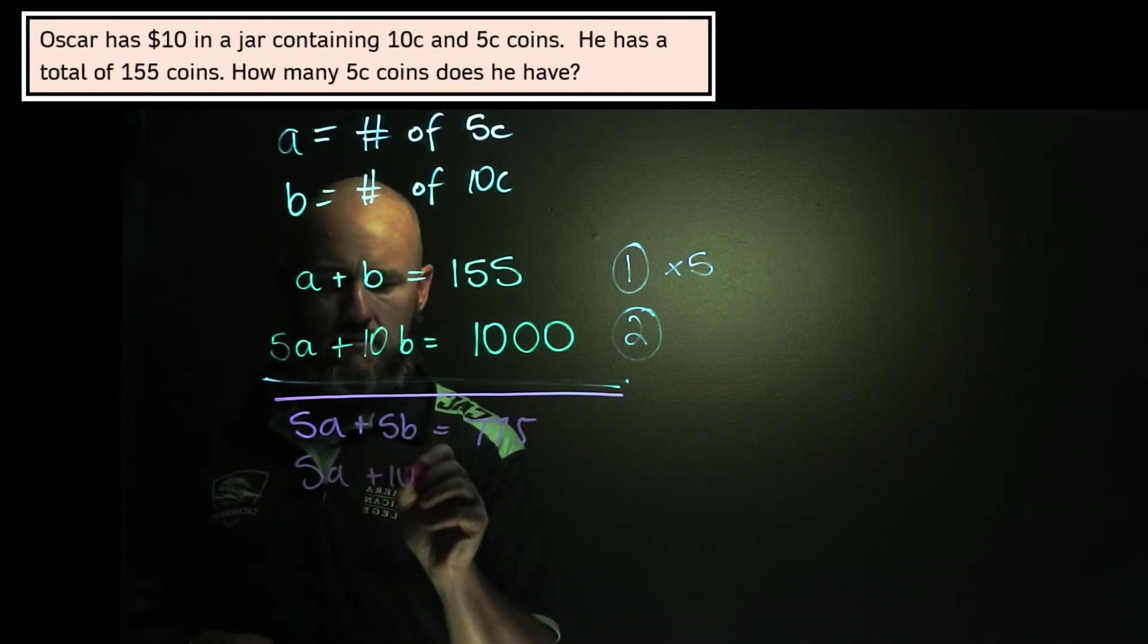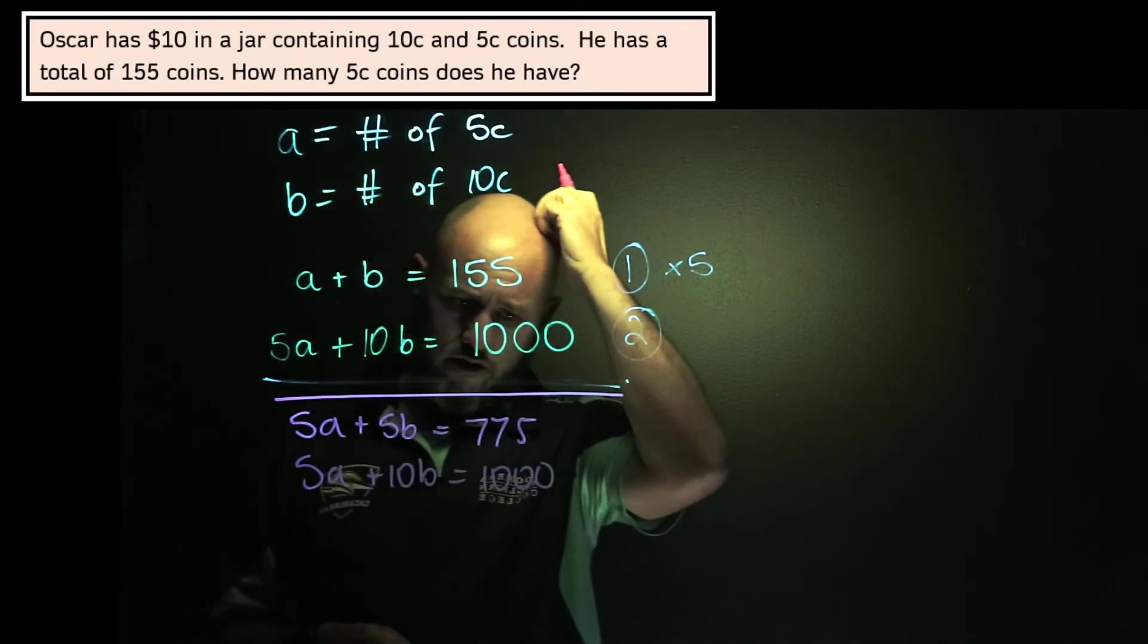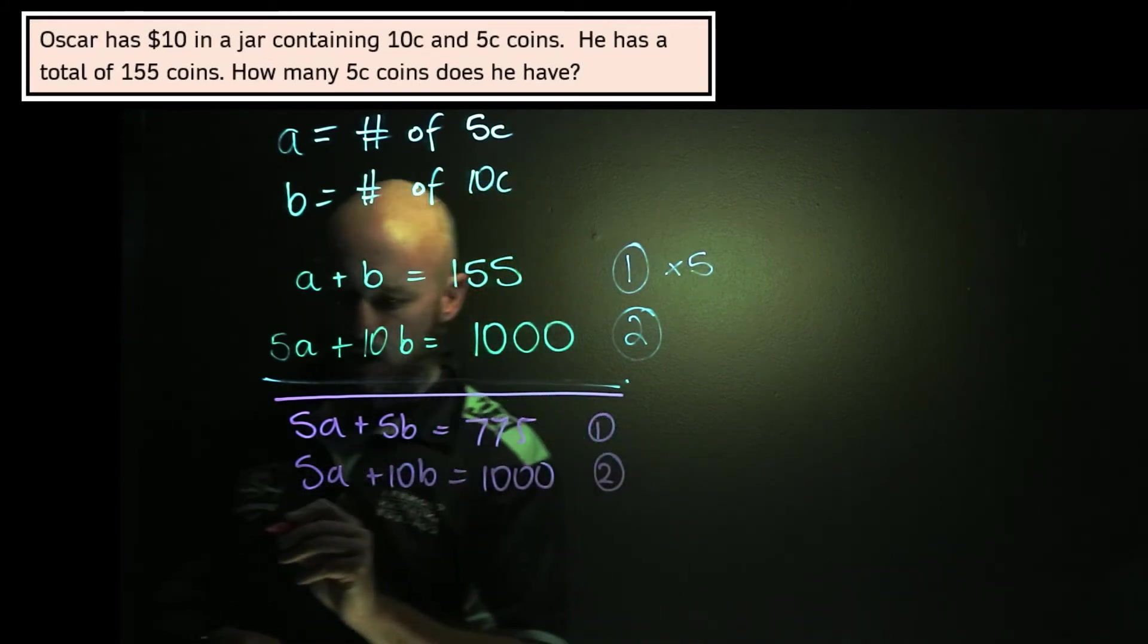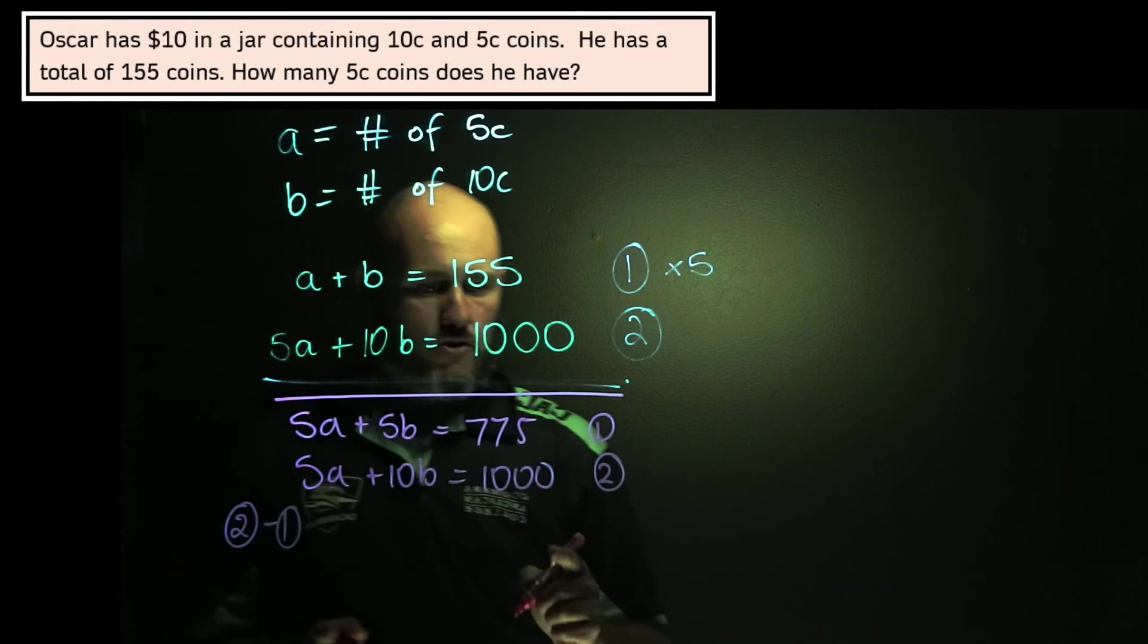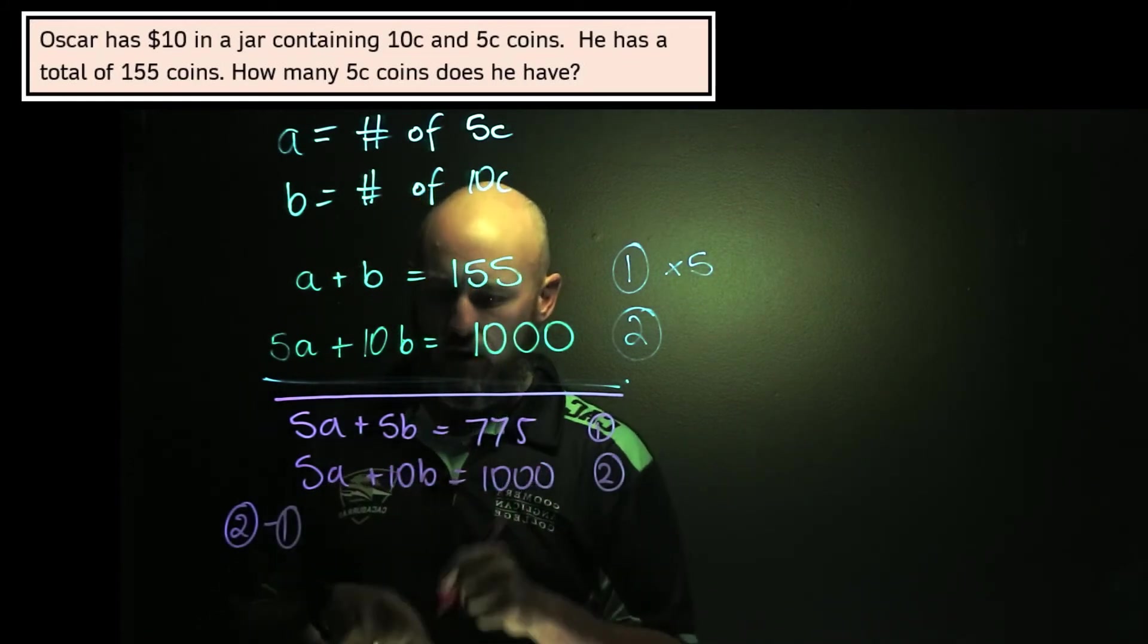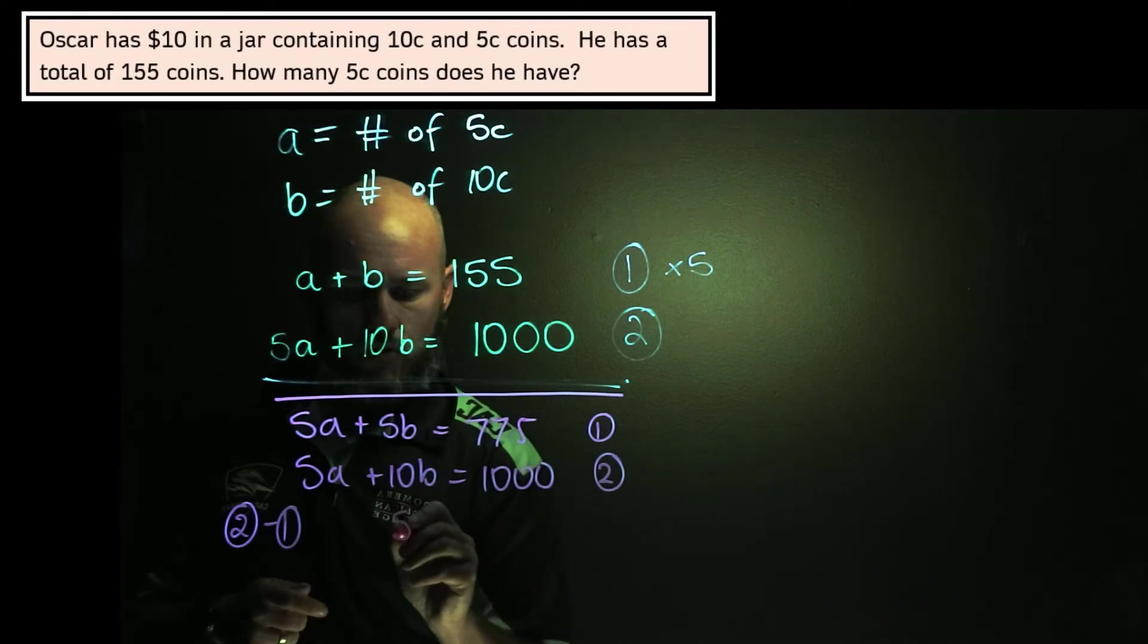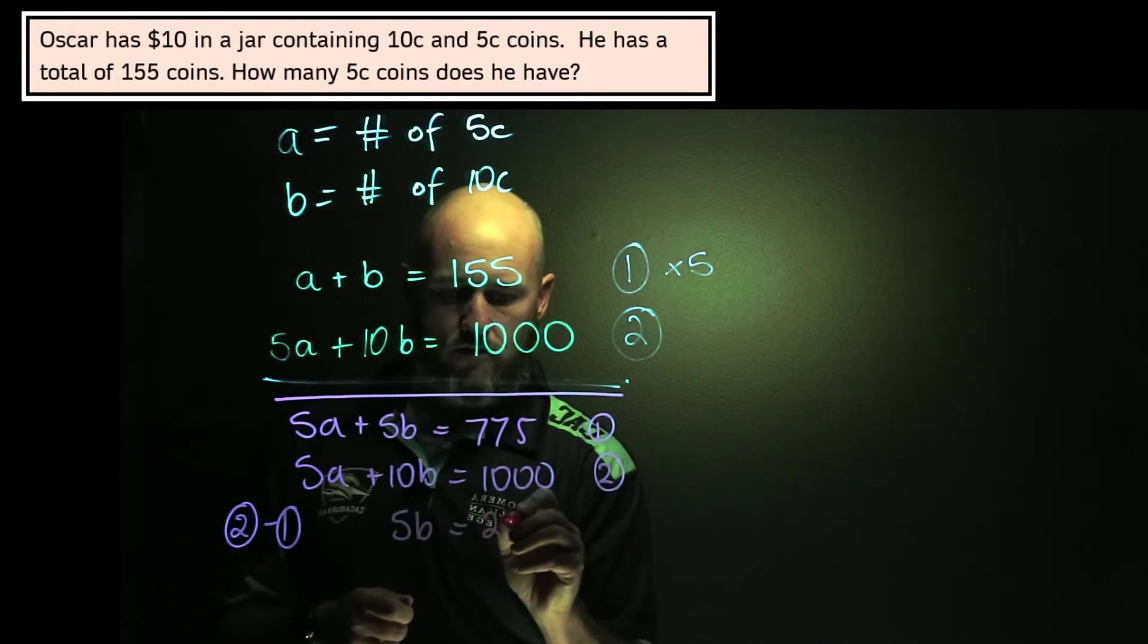And then 5A plus 10B equals 1,000. And so now I'm going to do that subtraction, but if this is 1 and this is 2, I'm going to do 2 minus 1. The reason I'm going to do that is that 10B minus 5B stays positive. The A's cancel. 10B minus 5B, of course, is 5B. And 1,000 minus 775 is 225.